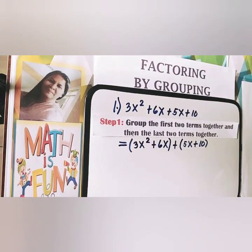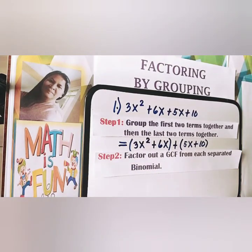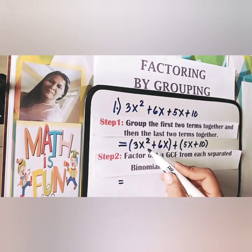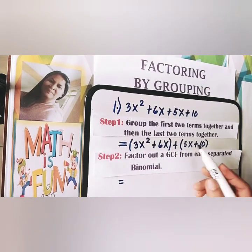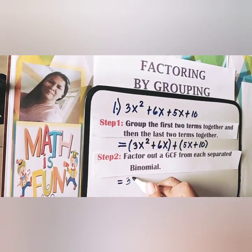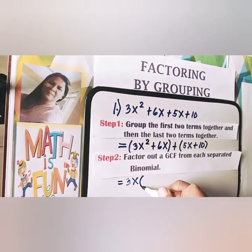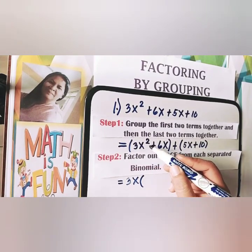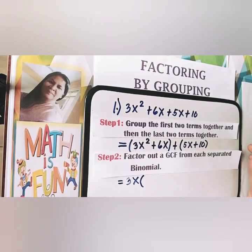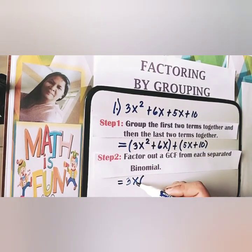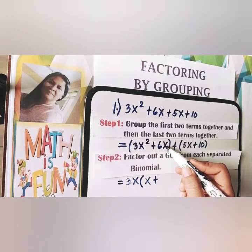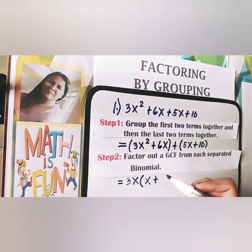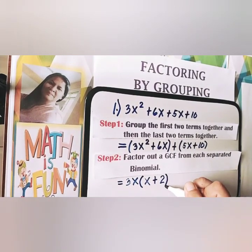Let's proceed to step number two — factor out the GCF from each separated binomial. The GCF of 3x squared plus 6x is 3x. Dividing each term by the GCF: 3x squared divided by 3x gives x, and 6x divided by 3x gives 2. So the first group becomes 3x times (x plus 2).